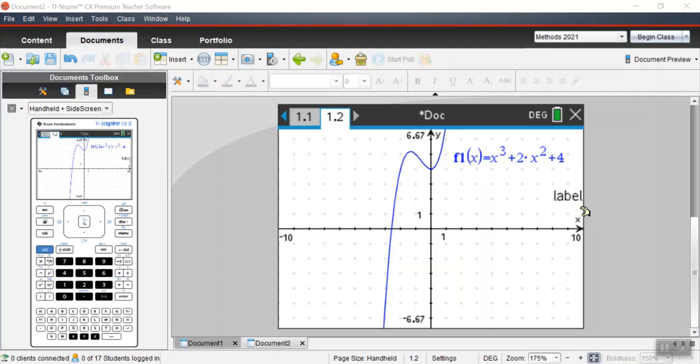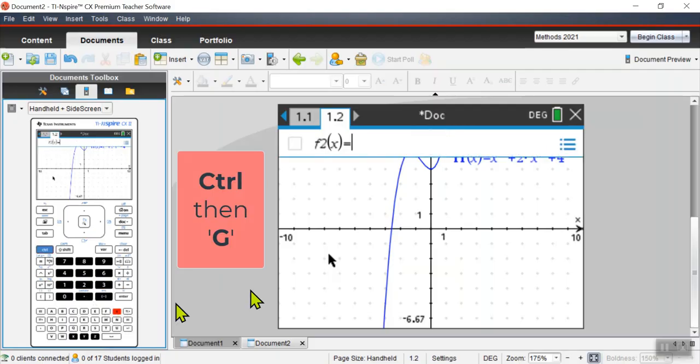You guys have been learning about second derivatives, first derivatives, so let's show you the first shortcut. Control G. That's brought up the second graph that I'm going to plot. Control G. Alright, that's the first shortcut.